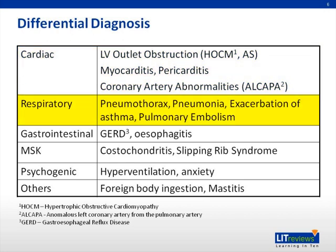Respiratory causes include pneumothorax, which can be either spontaneous or trauma-induced, pneumonia, asthma exacerbation, and more rarely, pulmonary embolism. Gastrointestinal causes include gastroesophageal reflux disease and esophagitis. Musculoskeletal chest pain is common in children, including costochondritis and slipping rib syndrome. Psychogenic causes include hyperventilation and anxiety. Foreign body ingestion may present with chest pain or more commonly may be asymptomatic. Do not forget to look at the chest wall for local infections to the skin and underlying tissues.